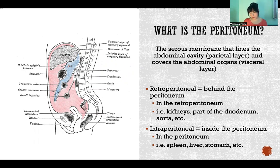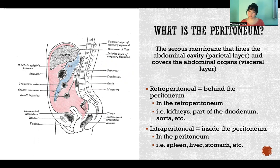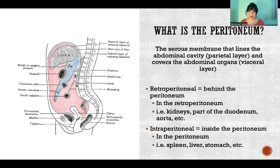As a quick reminder, a serous membrane is made up of two layers: the parietal layer, which is the layer that lines the inside of the cavity, and the visceral layer, which is the layer of the serous membrane that covers each individual organ. Both layers are secreting serous fluid, which is a slippery fluid, so the idea is we reduce friction among all the structures contained within that cavity. The peritoneum is just the special name we give for the serous membrane in the abdominal cavity.